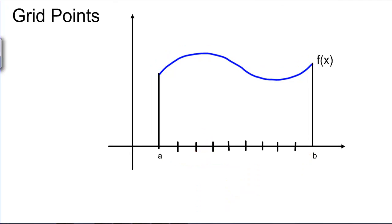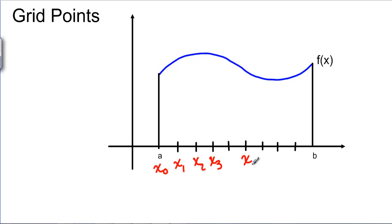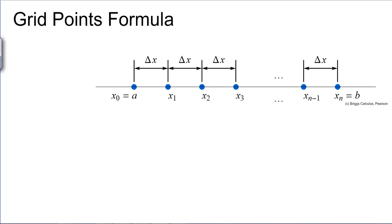Before we can define height, we need to define something called grid points. These are going to be all the little hash marks. We're going to call the first one at A, X sub 0. The next hash mark is X sub 1, X sub 2, X sub 3, etc. In the middle we'll call this X sub K, and all the way at the end X sub N because there are N of these. We need to find a formula for these grid points so that we know where we are on the X axis when we talk about which rectangle we're on and what the height is going to be.